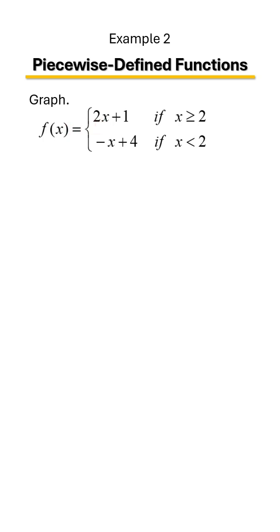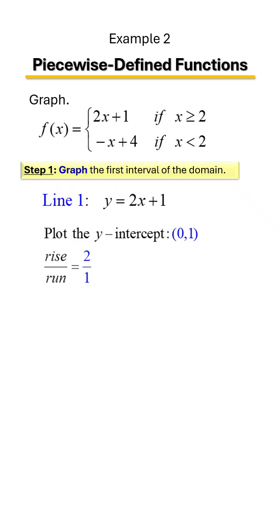Remember, if you're still struggling with how to graph lines, make sure you watch the playlist on graphing linear functions. To graph that, step one would be to plot the y-intercept, which is 0, 1. And from there, you're going to use your slope to rise and run to your next point. So that's a rise of 2 and a run of 1. So once I do that, my graph is going to look like so.